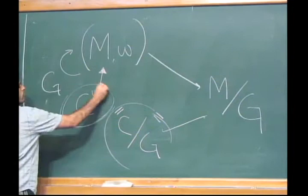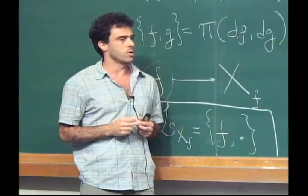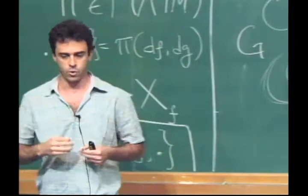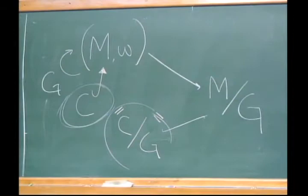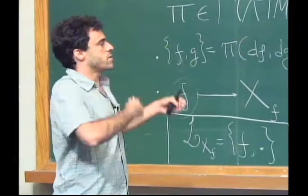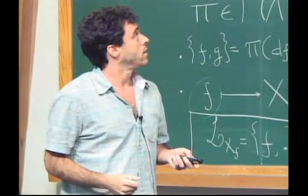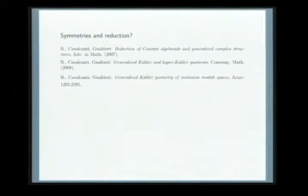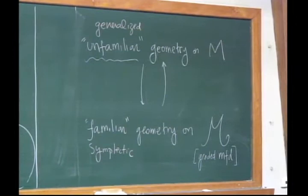These structures also appear in physics under the name WZW — Wess–Zumino–Witten. What I want to describe is how you can understand this unfamiliar geometry — also called generalized geometry, or Courant geometry — in terms of familiar geometry, and familiar to me is just symplectic. The point is that I can turn all these unfamiliar objects into familiar ones, but I pay a price: I have to work with something more general than just a manifold.